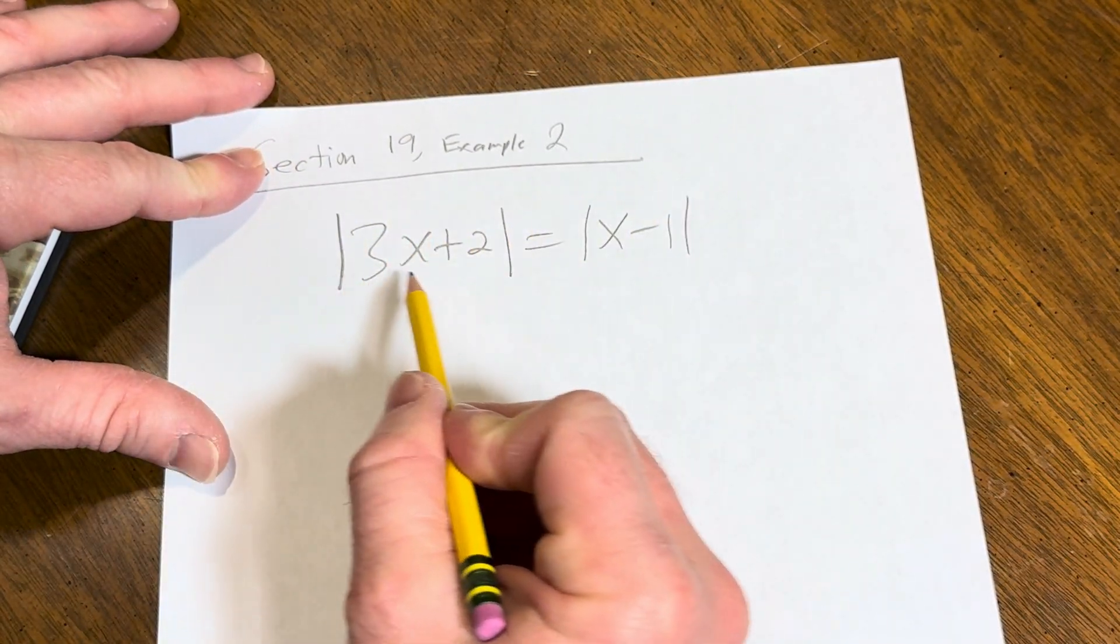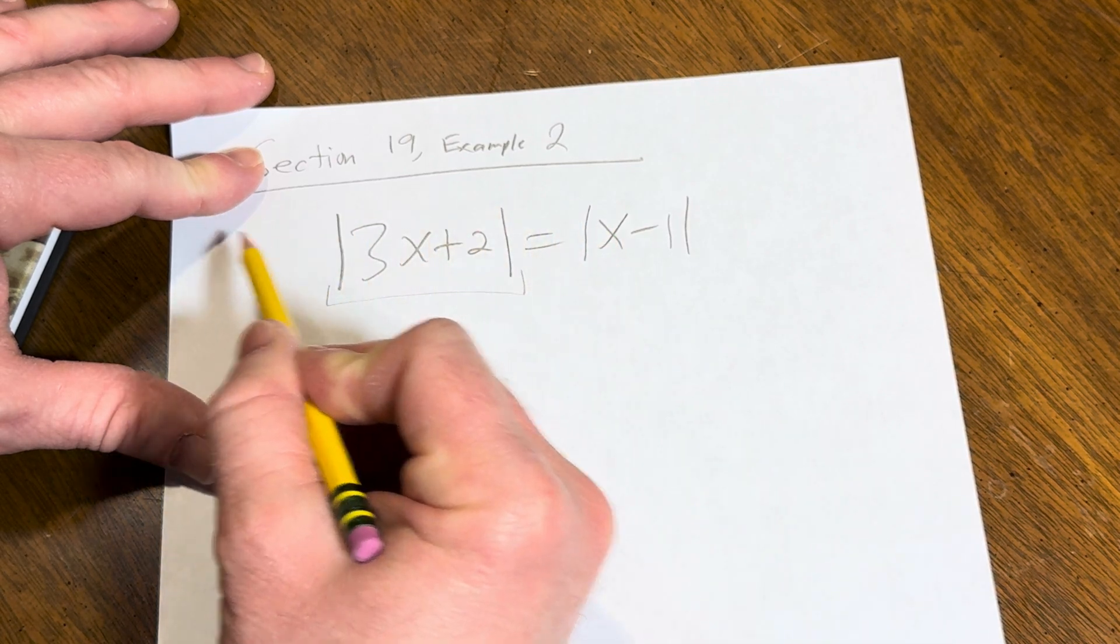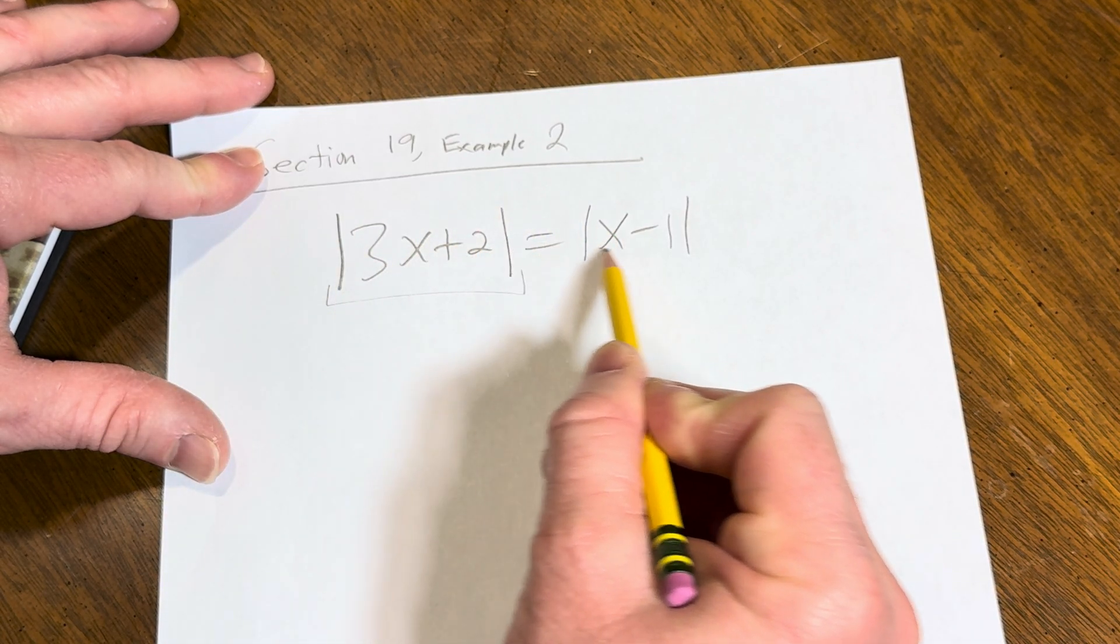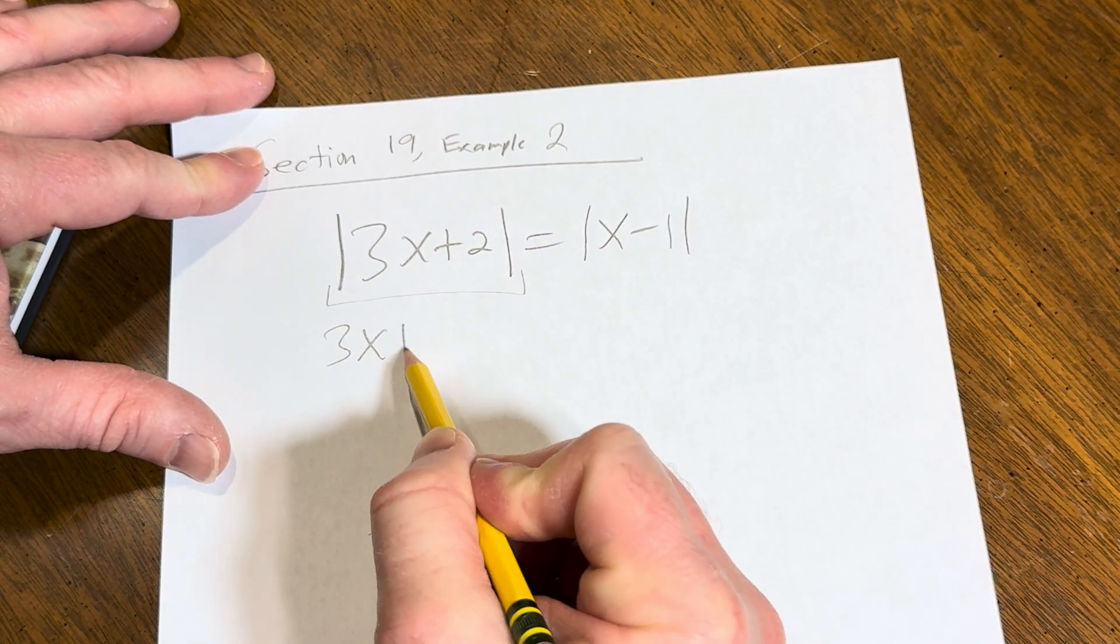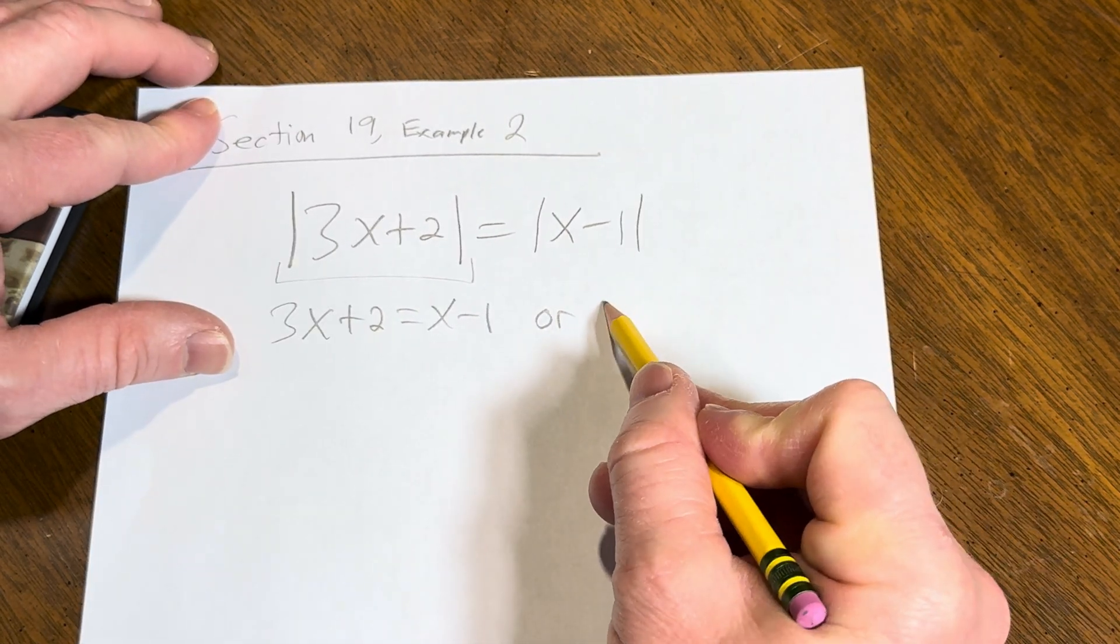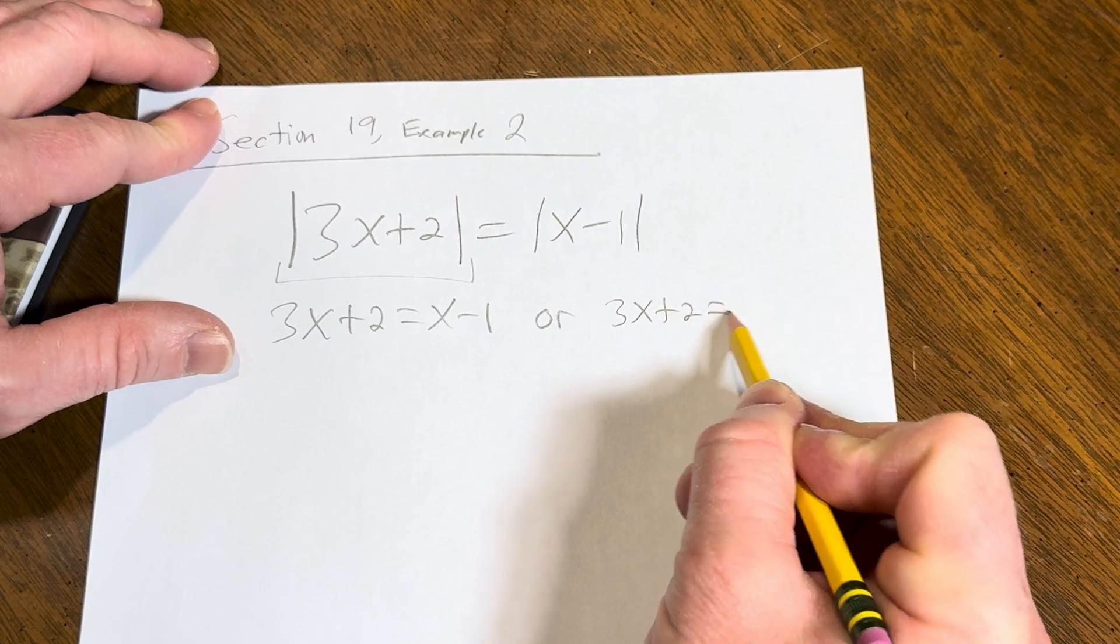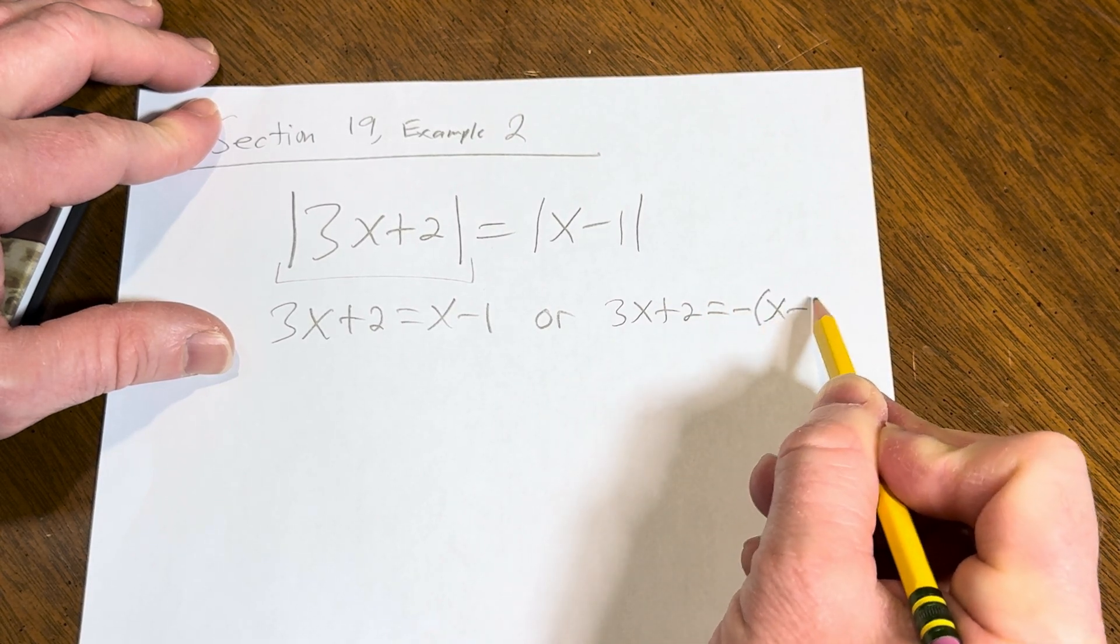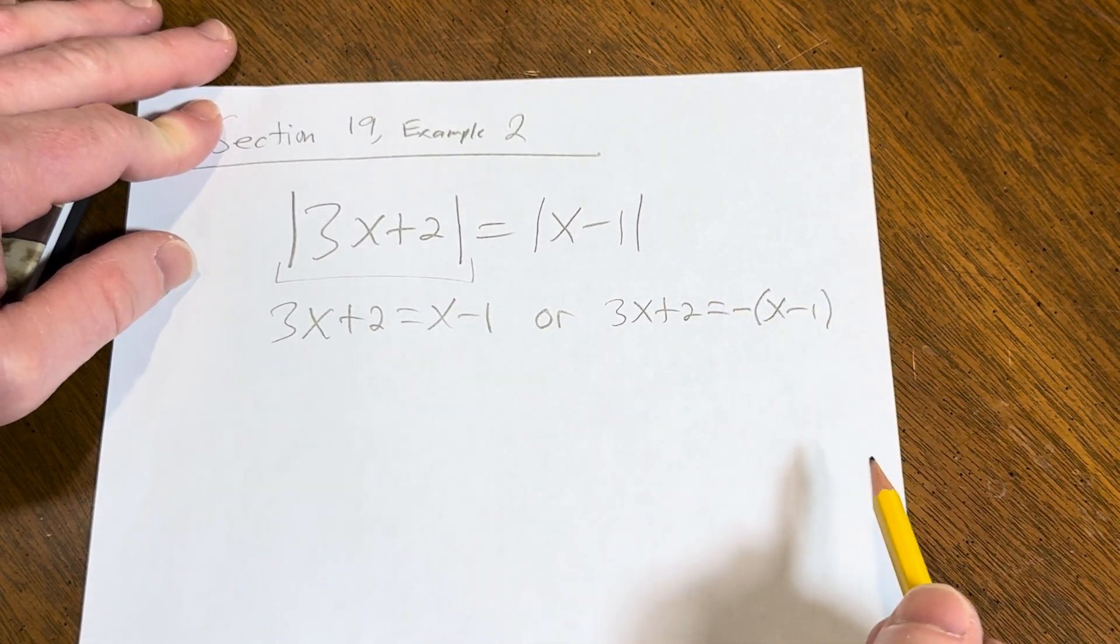So when you have something like this and you're trying to solve, what you do is you drop the absolute value, and you get 3x plus 2 equals x minus 1, or 3x plus 2 equals minus parentheses x minus 1. Those are the two possible cases.